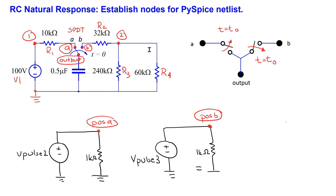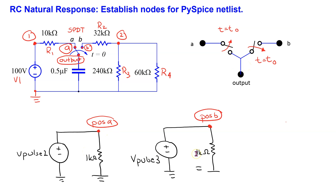In preparation for writing the PySpice netlist, let us label the components and nodes as shown here. We will model the single pole double throw switch using two single pole single throw switches. The first switch will be initially closed and then open at switching time T0. The second switch will be initially open and then close at switching time T0. These two single pole single throw switches will be controlled using pulse voltage sources as shown.